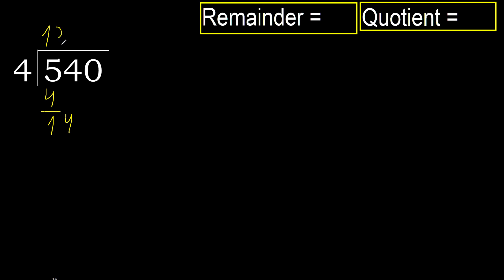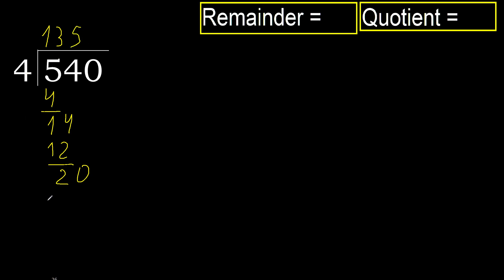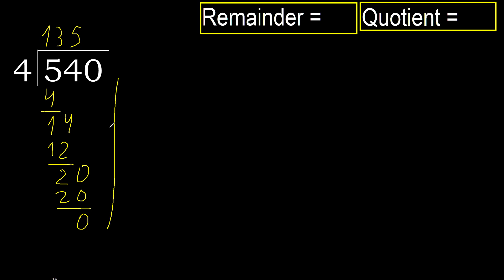Multiplied by 3 is 12, not greater. 14 minus 12 is 2. Next: 20. 4 multiplied by 5 is 20, not greater. 20 minus 20 is 0. There is no next number, therefore finish.